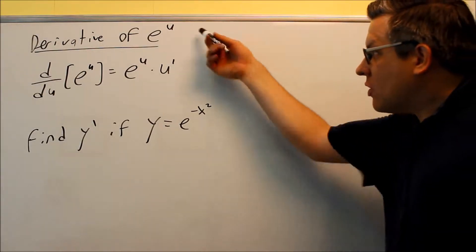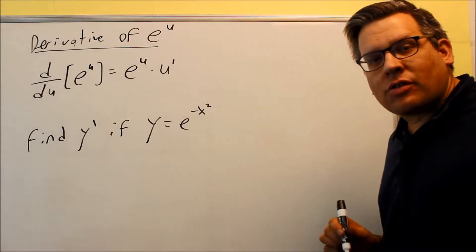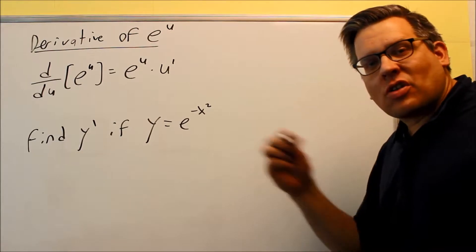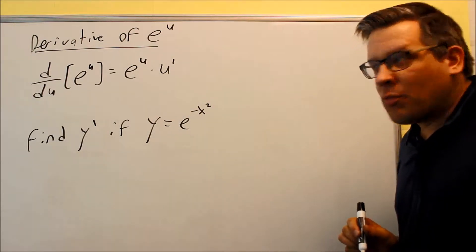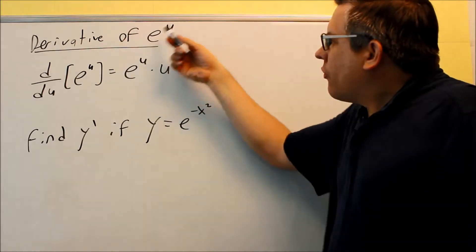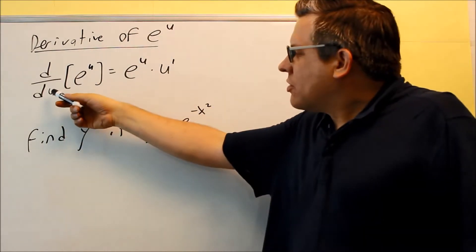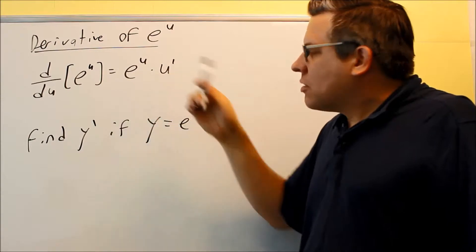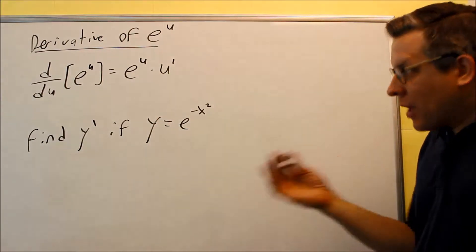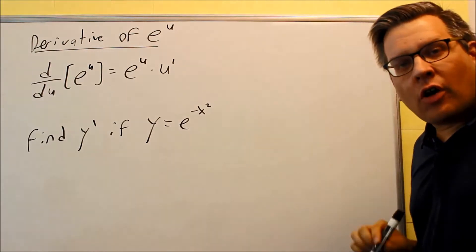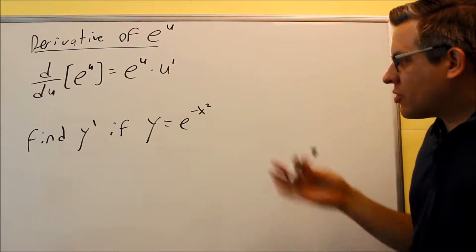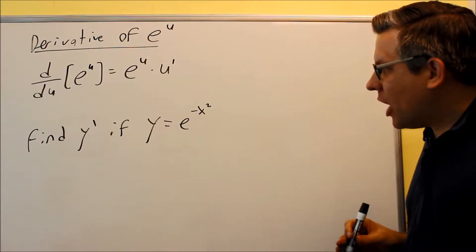We now want to talk about the derivative of e to the u. We've already talked about the derivative of e to the x is just itself. Well now, let's combine it together with the chain rule. The derivative of e to the u is e to the u times u prime. So basically the derivative will be itself and then times the derivative of the exponent. That's how you do a derivative. So let's apply that now to this example problem.